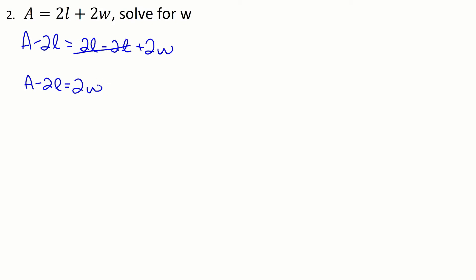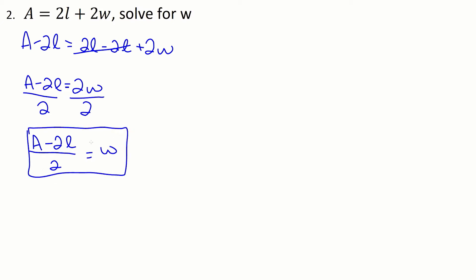We still want to get at this W, and the only thing left is the multiplication by 2. So now we're going to divide both sides by 2, and we get A minus 2L divided by 2 is equal to W. So this is one version of the final answer, where the left-hand side is all over one fraction. It's also possible you might split up the fraction and get something like A divided by 2 minus L. Both are exactly equivalent, and if you substituted in to solve W, you would get the exact same answer.